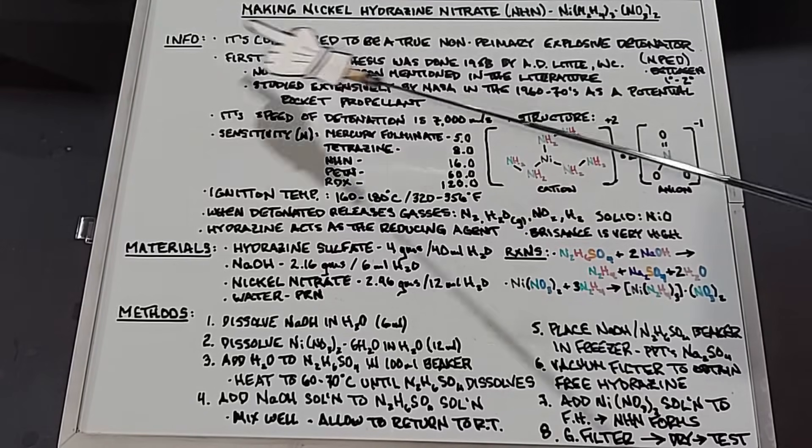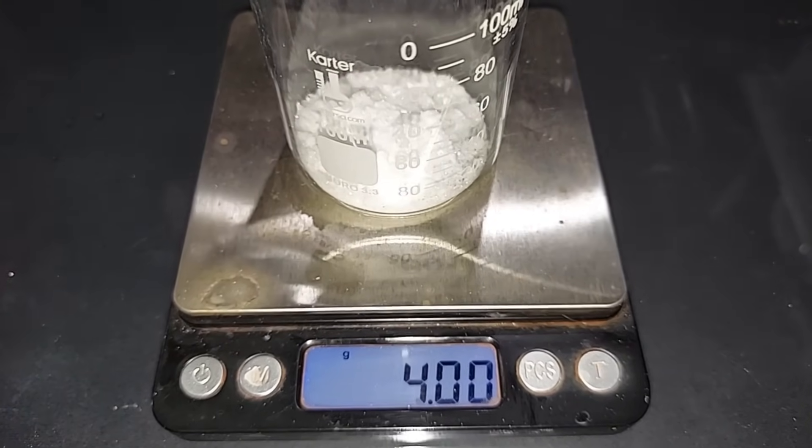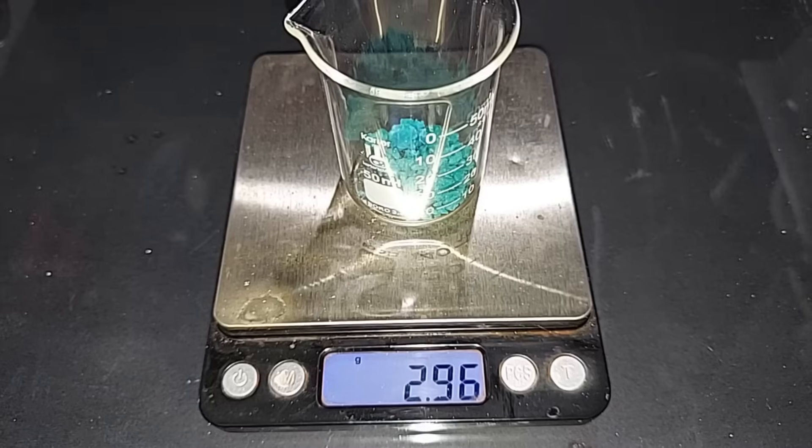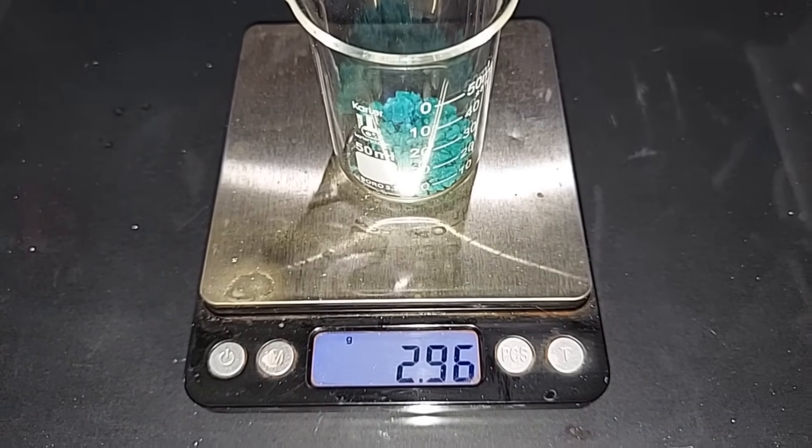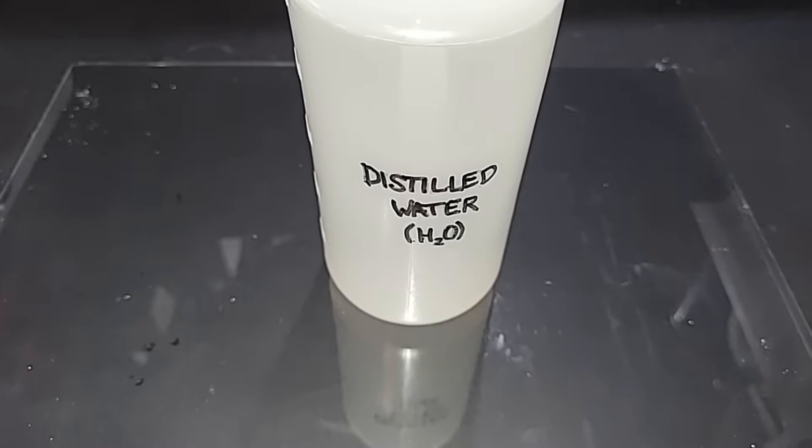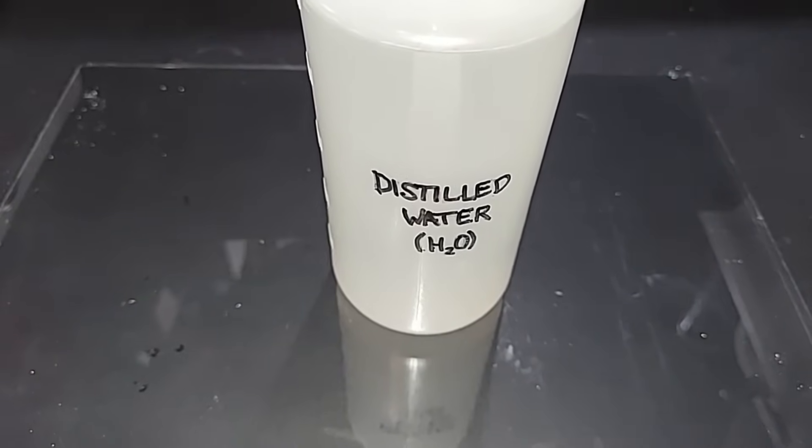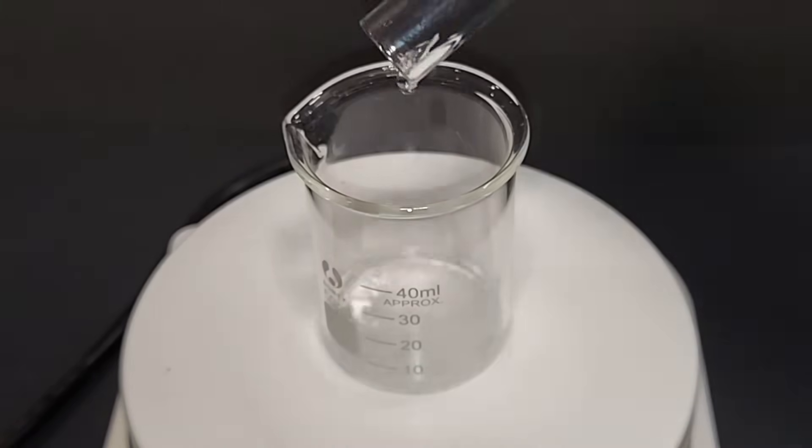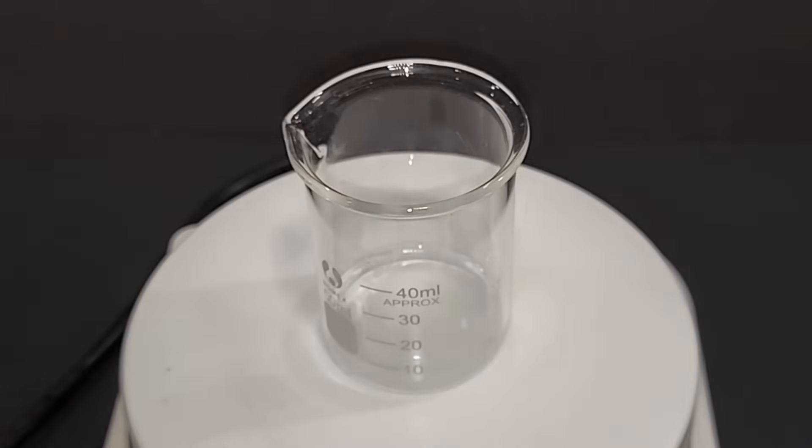I have absolutely no whiteboard left right here, so let's go ahead and make our nickel hydrazine nitrate. Four grams of hydrazine sulfate made in a previous video, pre-weighed. 2.16 grams of sodium hydroxide, which I've never made, pre-weighed. 2.96 grams of nickel nitrate hexahydrate made in a previous video, pre-weighed. Distilled water being held in a plastic bottle, to be used in varied amounts throughout the experiment. The first step I'm going to do is hydrate both the sodium hydroxide and the nickel nitrate so they're ready to go later. In this beaker we have 2.16 grams of sodium hydroxide, and I'm going to add to that the 6 milliliters of water. Sodium hydroxide is extremely soluble, so even though this is a small amount of water, it will dissolve in it well.